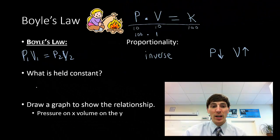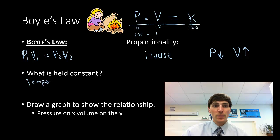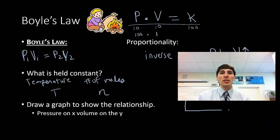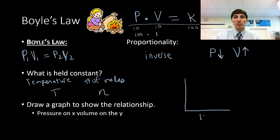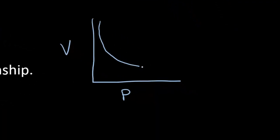Boyle had to keep the other variables constant, such as temperature and the number of moles of gas. When you see this graphically, we have pressure and volume. As the pressure went down, the volume was high, and as the pressure increased, the volume decreased. We saw this inverse relationship.